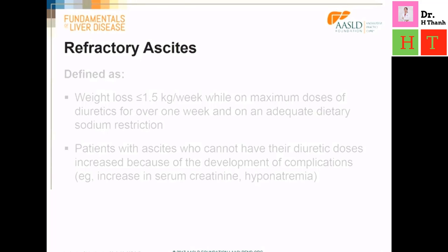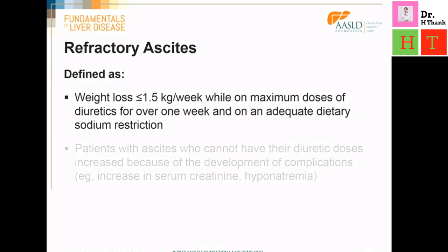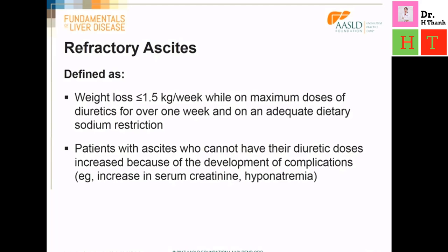Ten percent of patients will continue to have ascites despite sodium restriction and maximal diuretic doses. Such patients are unable to lose 1.5 kg of water weight per week while on maximal doses of diuretics for over a week and while on adequate dietary sodium restriction. Such a patient is said to have refractory ascites. Patients whose ascites cannot be eliminated because they are developing complications with diuretics are also said to have refractory ascites.